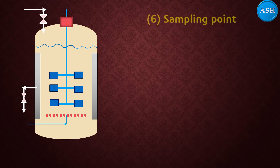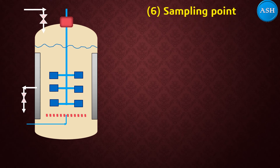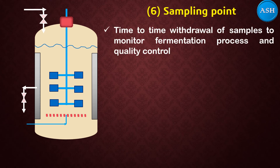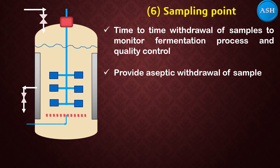The sixth part is the sampling point. It is used to withdraw samples at particular time intervals — time to time withdrawal is important for monitoring the fermentation process and monitoring the quality of the product. The sampling point provides aseptic withdrawal of the samples.